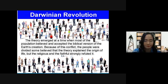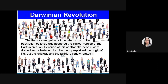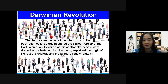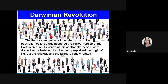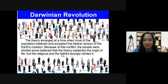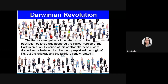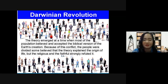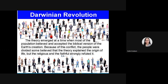Regarding society's engagement with Darwin's theory: it emerged at a time when most people believed and accepted the biblical version of the Earth's creation. There was a conflict between the divine theory and Darwin's evolution theory, and people were divided. Some accepted that the theory explained the origin of life, but the religious and faithful strongly refuted it, leaving society split between the two positions.